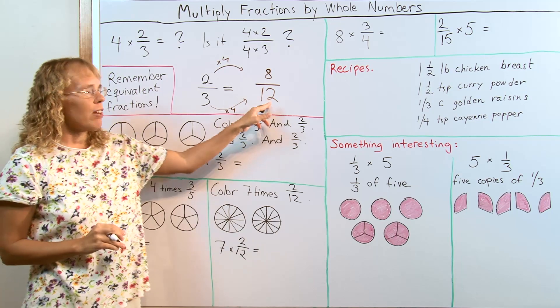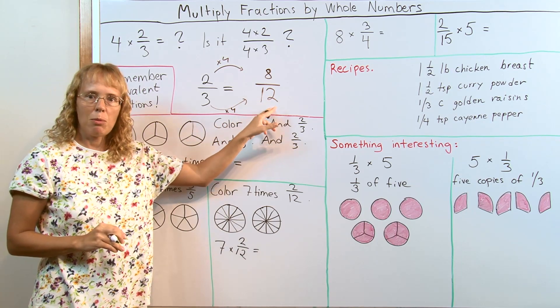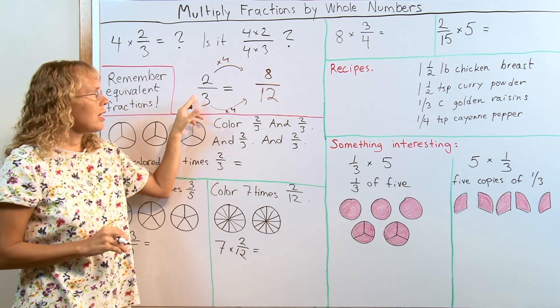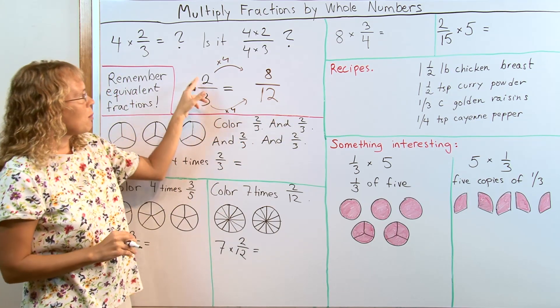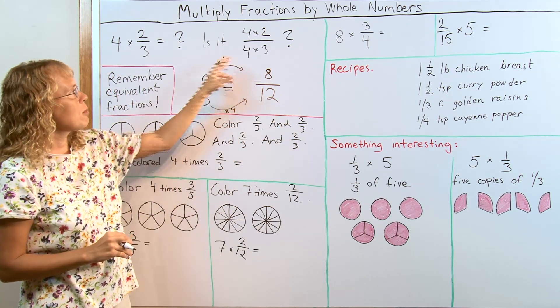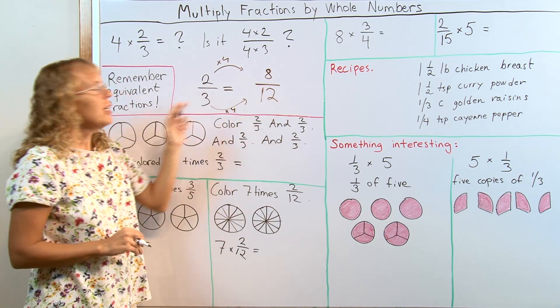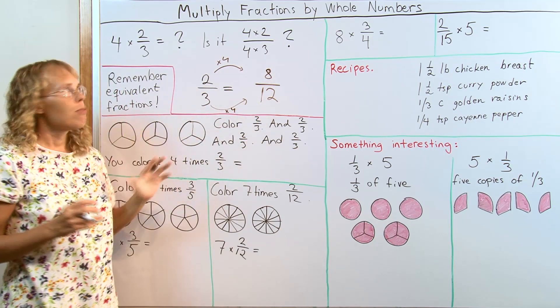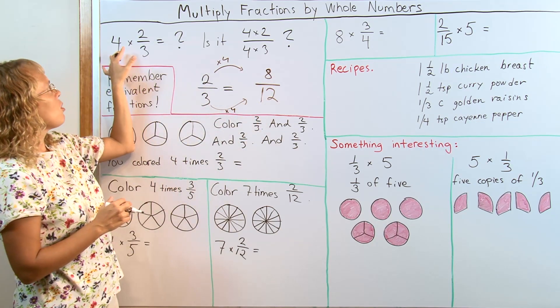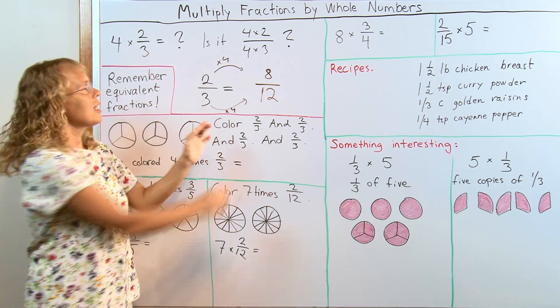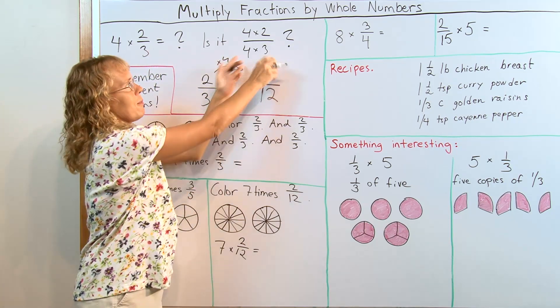This is an equivalent fraction — it's the same amount of pie to eat here as here. We multiplied this number by four and this number by four. So surely, if we want to find 4 times 2 thirds, it cannot be done that way.